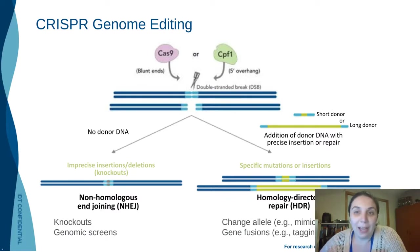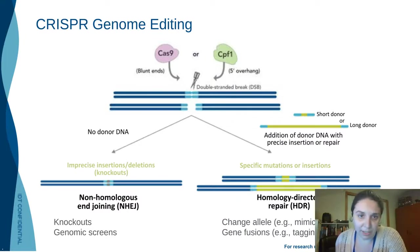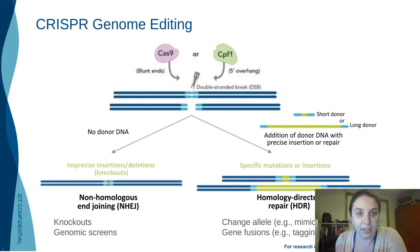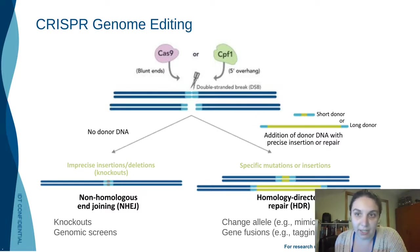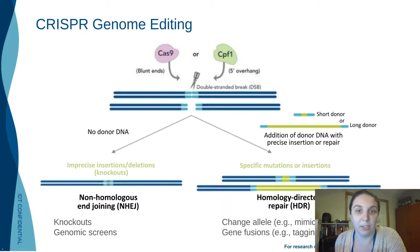Here's our obligatory DNA repair pathway slide. After you've used your CRISPR reagents — be they Cas9 or Cas12a — to generate your double-stranded break, if no donor template is provided, that break will be repaired through the non-homologous end-joining pathway, resulting in the formation of imprecise indels, which is useful for generating knockouts in genomic screens. However, if we provide a DNA template with our desired edits, you can use single-stranded oligos for short edits or long single-stranded or double-stranded DNA for larger edits to generate specific mutations or insertions through the HDR pathway.